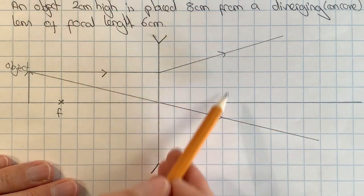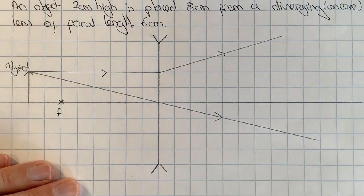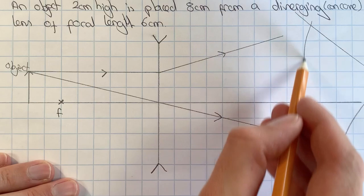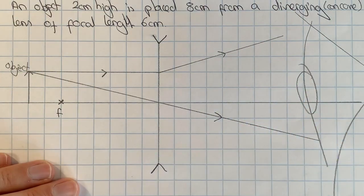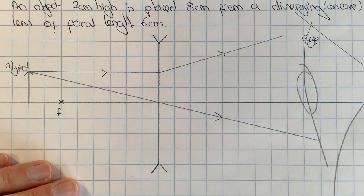Now these rays are not crossing, which tells me there is not a real image formed here, which means I'm going to need to add in an eye as it's going to end up being a virtual image. So I can label my eye over here.